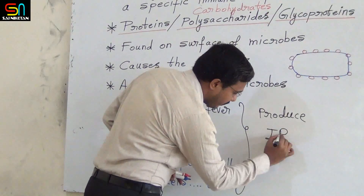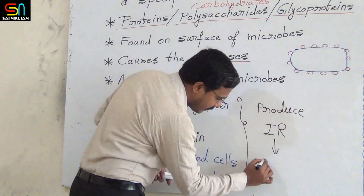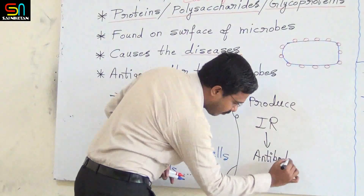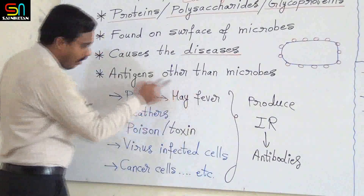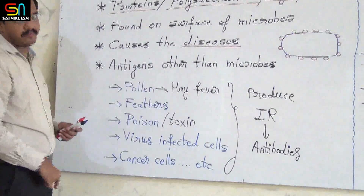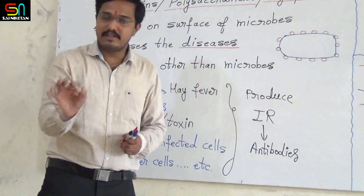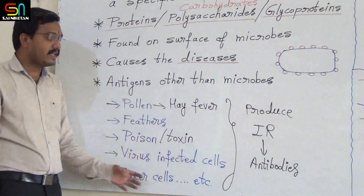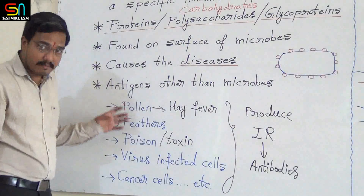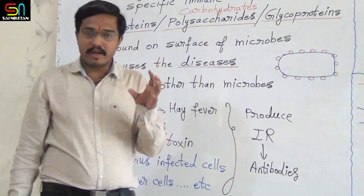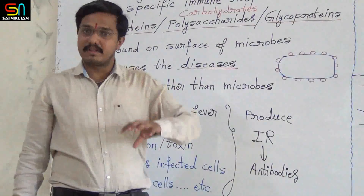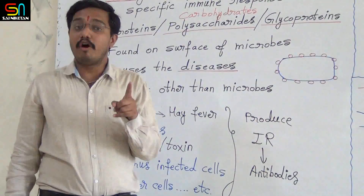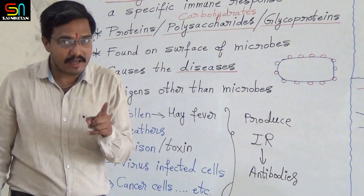They produce immune response, and at the end of the immune response there is production of antibodies. Therefore they are all also antigens. You need to remember that antigens are not only present on the surface of microbes — antigens are also present in these components. Simply put, any foreign molecule, we can call it an antigen.